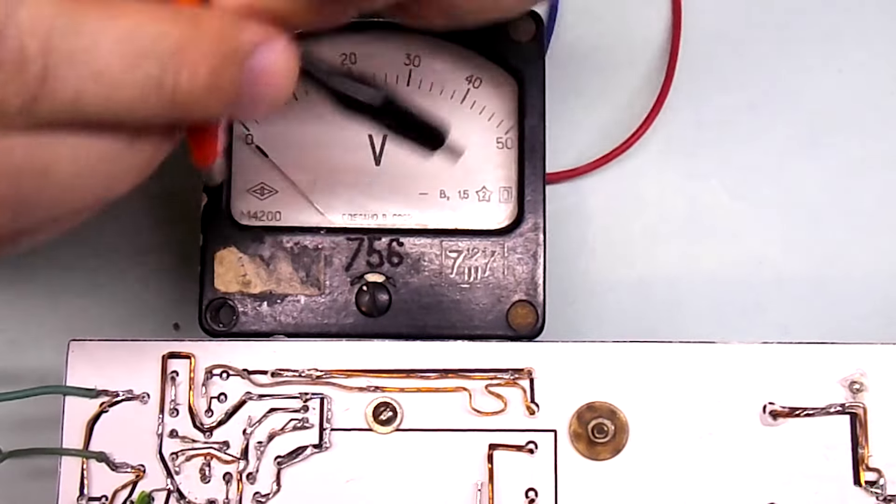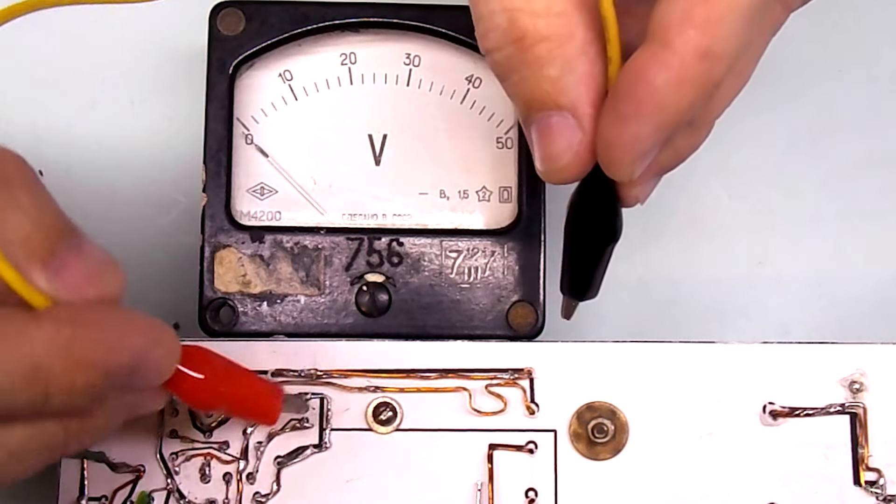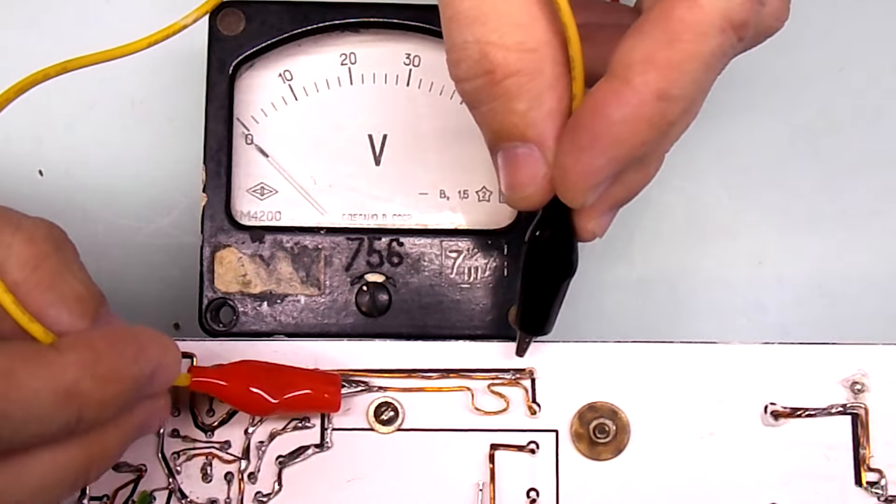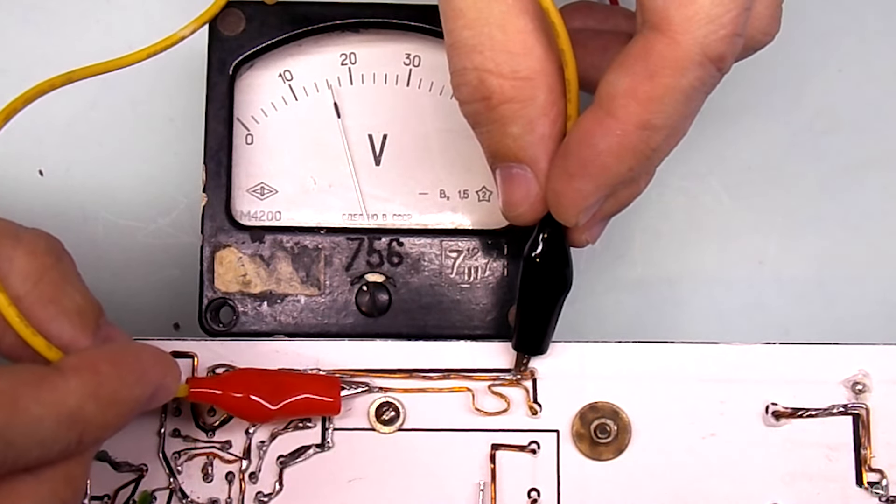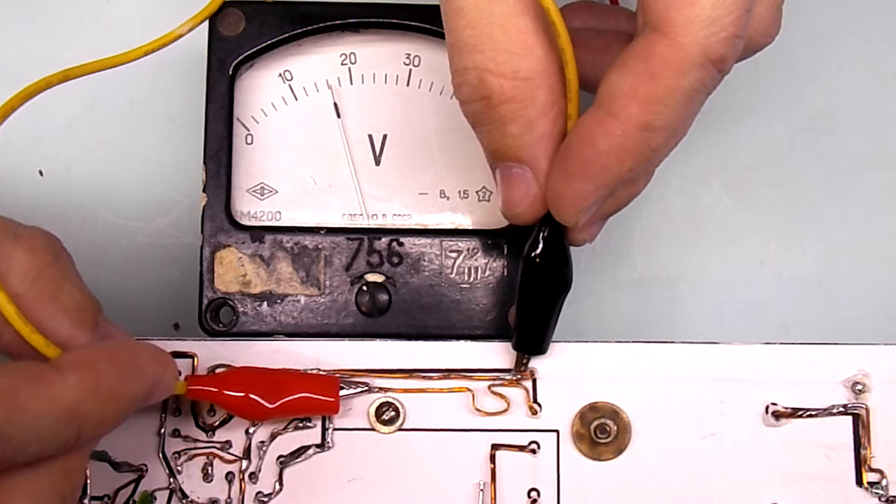I swap the probes and sit on the same ends again. In the second half cycle of this winding, the voltage is also 16 volts. As you can see, the voltage matches very precisely, this is very good.